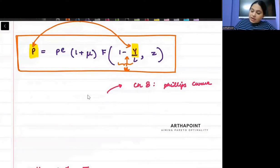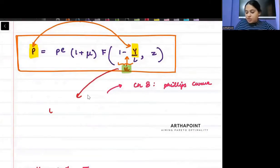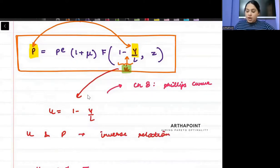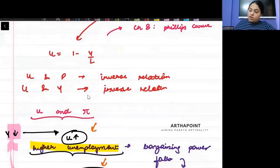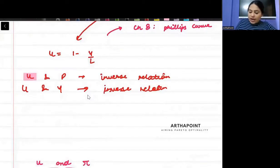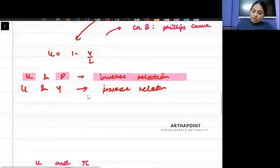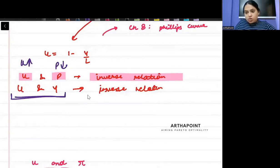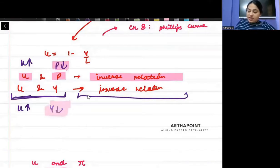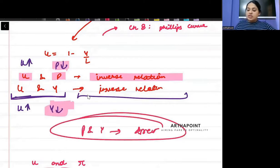Let me repeat this. Try to understand. Instead of U, I wrote 1 minus Y by L. U and P, they have inverse relation. U and Y also have inverse relation. This is what I proved. When Y increases, unemployment decreases. U and Y have inverse relation. So U and P are inversely related. So suppose U increases, then P will decrease. U and Y are also inversely related. So when unemployment increases, output will also decrease. So can't I say that they are directly related? I can. So P and Y, they have a direct relationship in this equation.